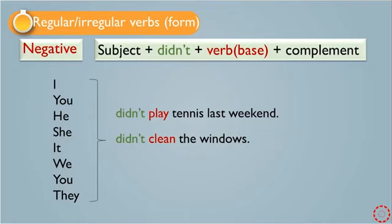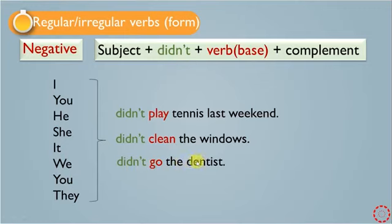Another example: 'We didn't go to the dentist.' After didn't we must use the base form of the verb, which is 'go.' We cannot say 'went' because we have didn't.